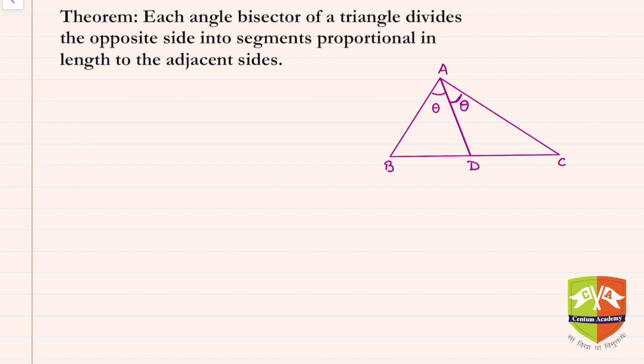So before we start, let's explain what's given. So this is what is given: AD is the angle bisector of angle BAC.